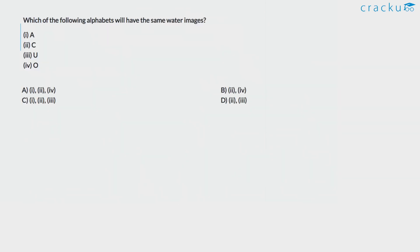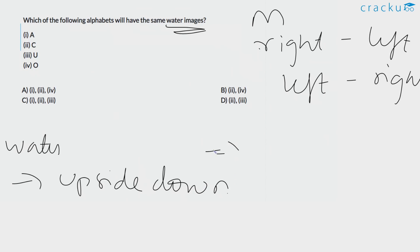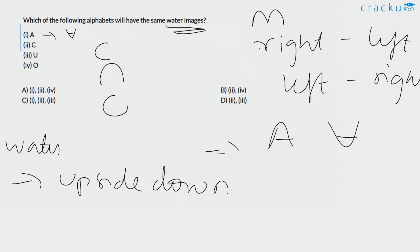Which of the following alphabets will have the same water image? The water image is opposite to the mirror image. In the mirror image, the right side goes to the left and the left goes to the right. But in the water image, the answer image will be upside down — the right and left sides remain unchanged. So which alphabets have the same water image? A will change, C will be written the same, U will change, and O will be written the same. Therefore, the answer is option B — C and O have the same water images as the question image.